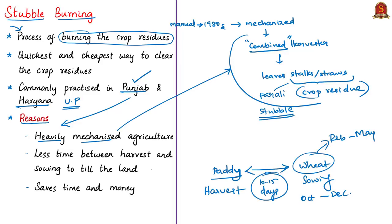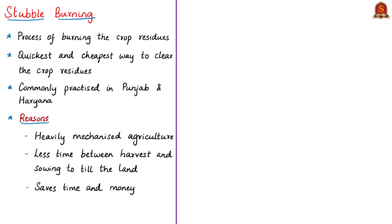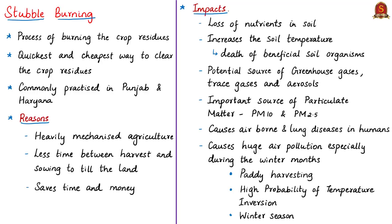Farmers feel it would take months to clear crop residues, so they go for burning. According to farmers, it saves time and money. However, there are severe negative impacts, particularly on the National Capital Territory of Delhi. Stubble burning leads to loss of important soil nutrients such as nitrogen, phosphorus and potassium because of the burning, and the increased temperature leads to death of several beneficial soil organisms required for cultivation.